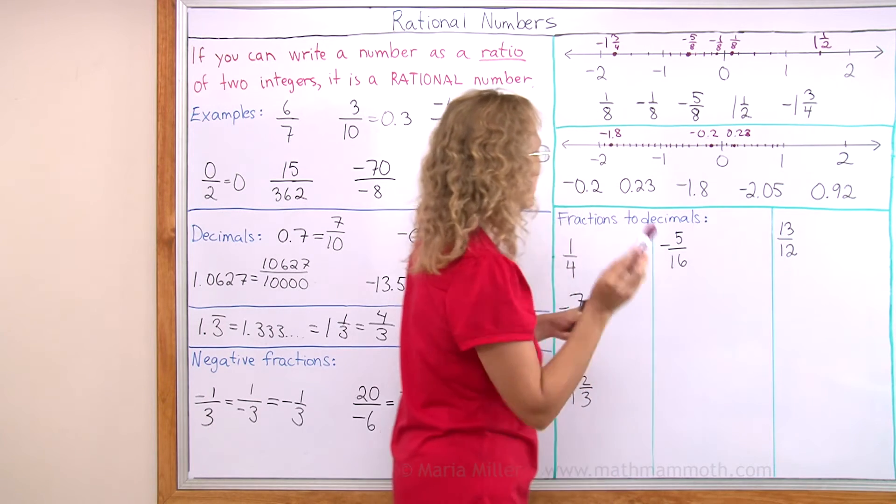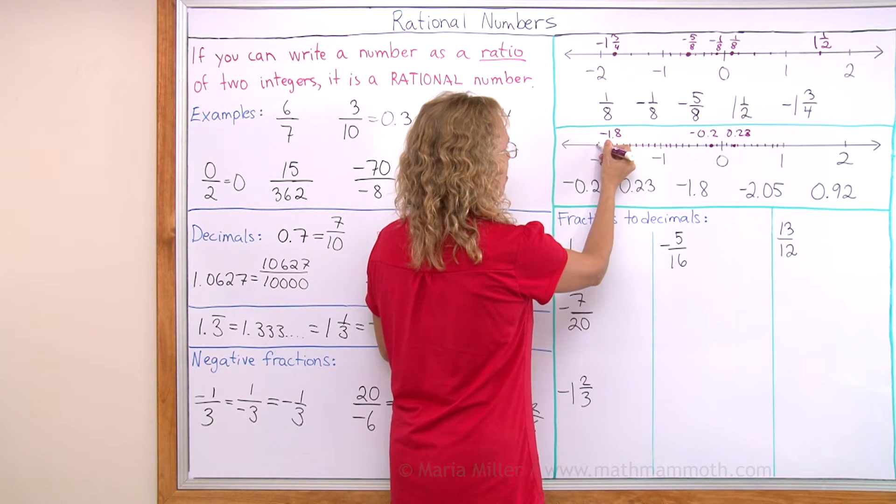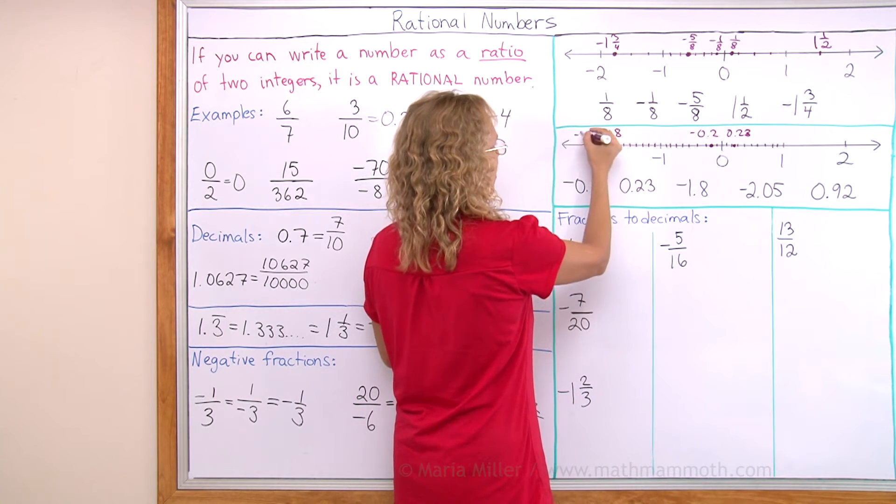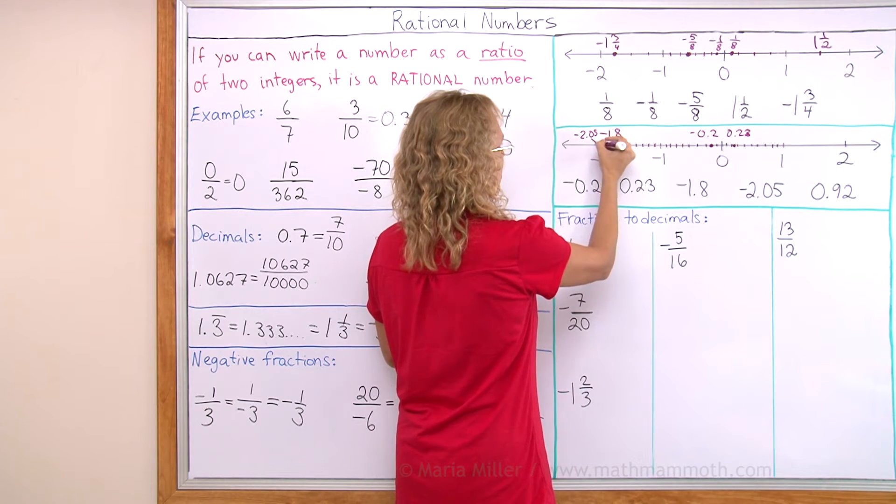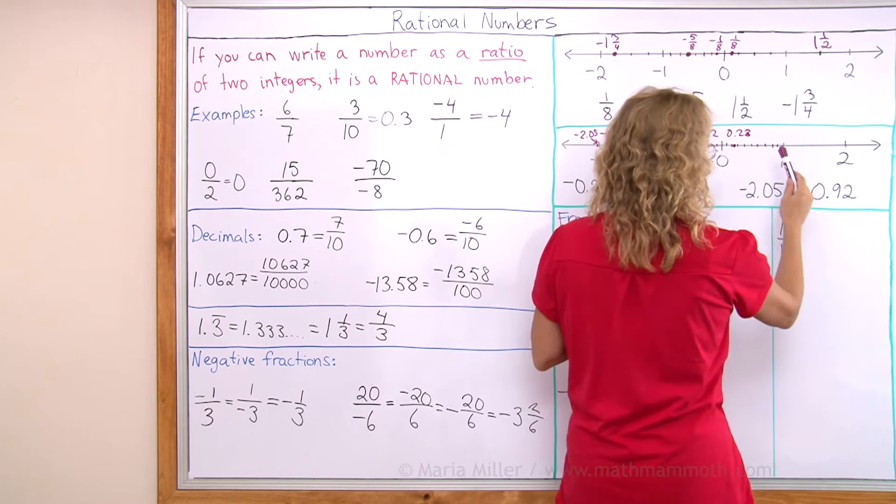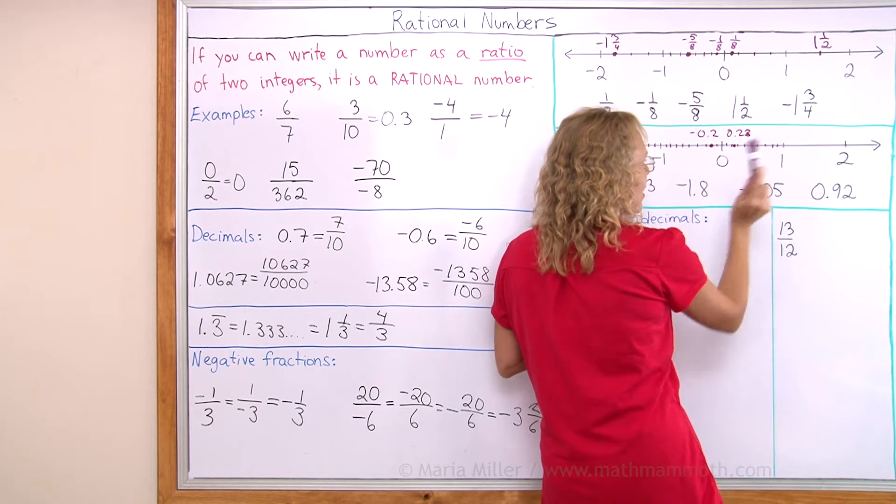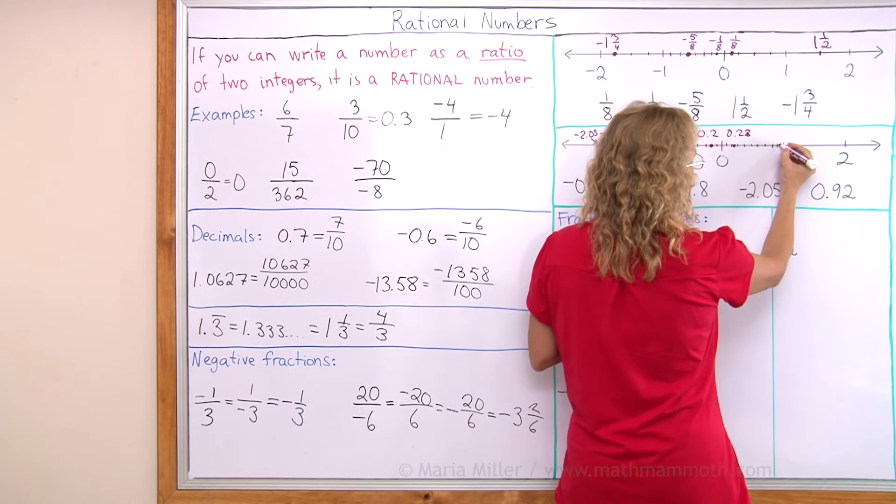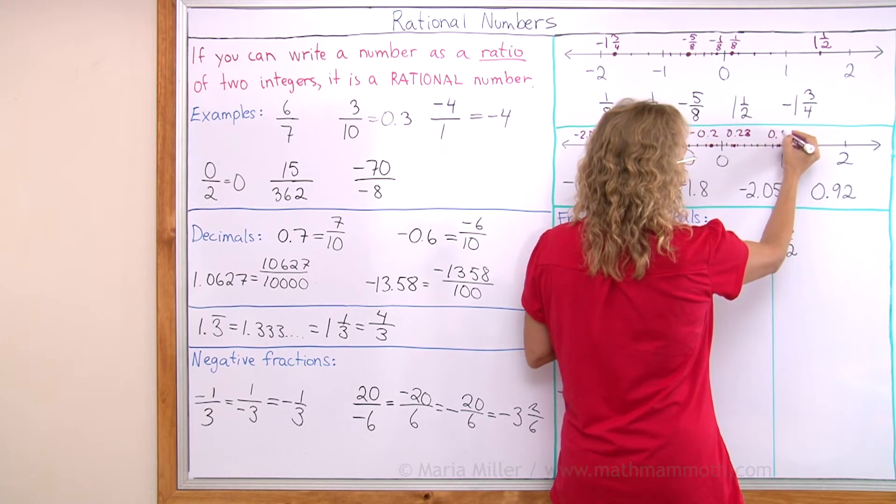Negative 2.05 is just a little bit, a little tad beyond negative 2 over there. And then 0.92 is clear, it's a little bit past 0.9 over here. 0.92.